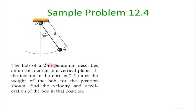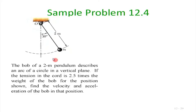For the simple pendulum problem: a bob on a 2-meter pendulum (which is the radius of curvature ρ). If the tension in the chord is 2.5 times the weight of the bob at a given position, find the velocity and acceleration of the bob. This is easier since the tension (force) is given and we find acceleration.